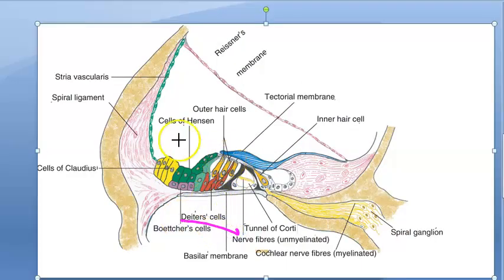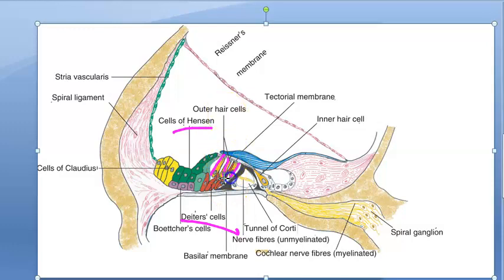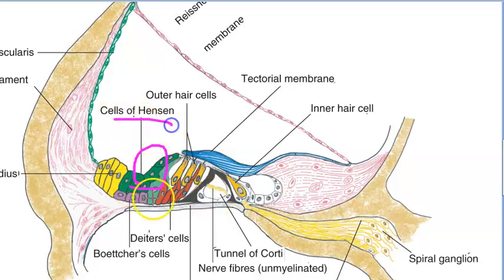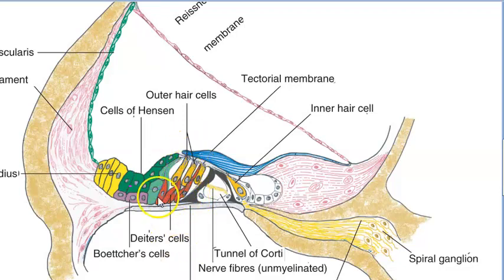The supporting cells are the Deiter cells and the cells of Henson. Deiter cells are located between the outer hair cells, as you can see here. Above the Deiter cells, you have the cells of Henson, which lie outside of the Deiter cells. So: cells of Henson, then Deiter cells which are between the outer hair cells — these are the supporting cells.